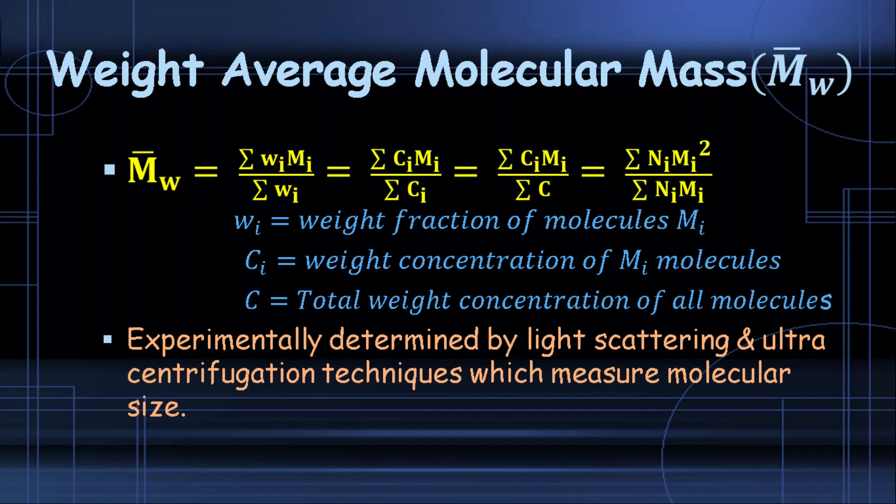For the weight average molecular mass, we have the summation of weight times mass divided by the summation of weight, where w_i, c_i, and c denote the weight fraction of molecules, concentrations, and total weight respectively. Experimentally, weight average molecular mass is determined with the help of light scattering and ultracentrifugation processes.